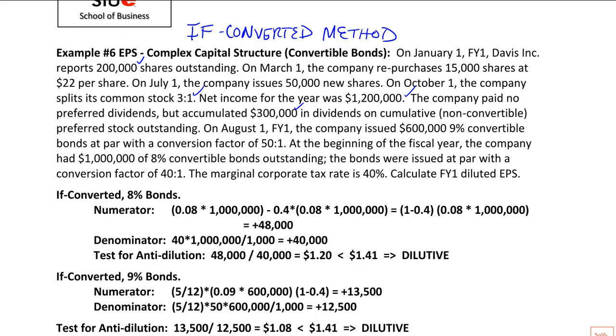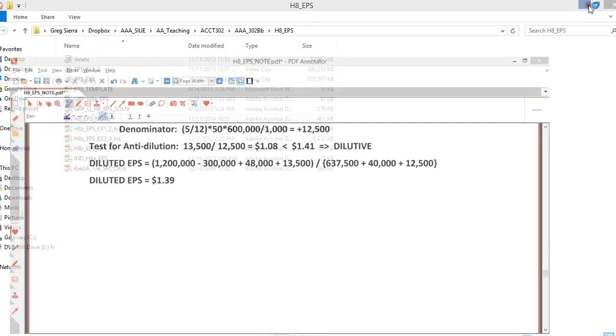Accumulated $300,000 dividends on cumulative preferred stock. Now here's where the if-converted method comes in. The current year they issued a $600,000 nine percent convertible bond at par, and we have a conversion ratio. They also had outstanding from the beginning of the year one million of eight percent convertible bonds with a conversion ratio 40 to 1.